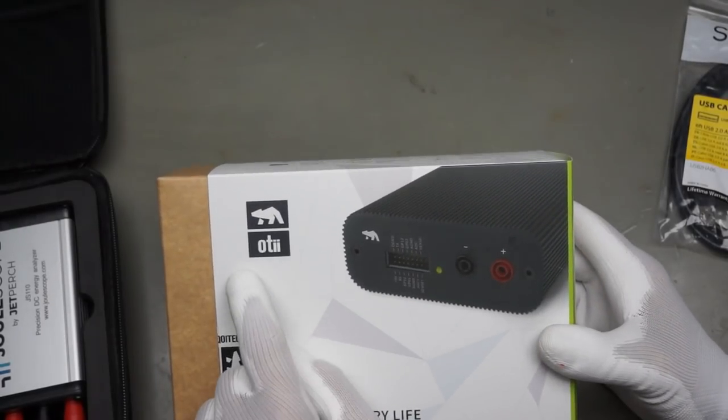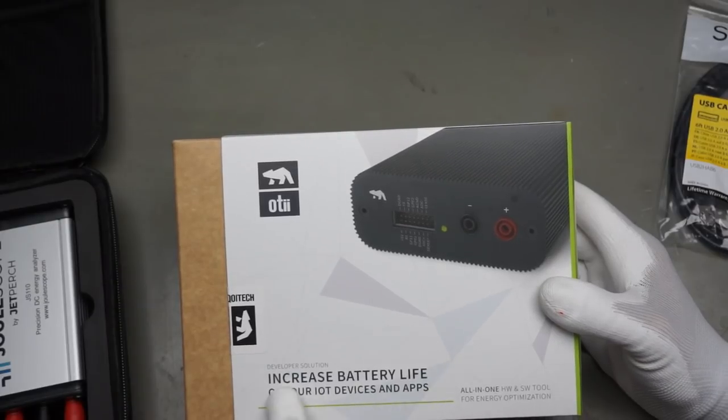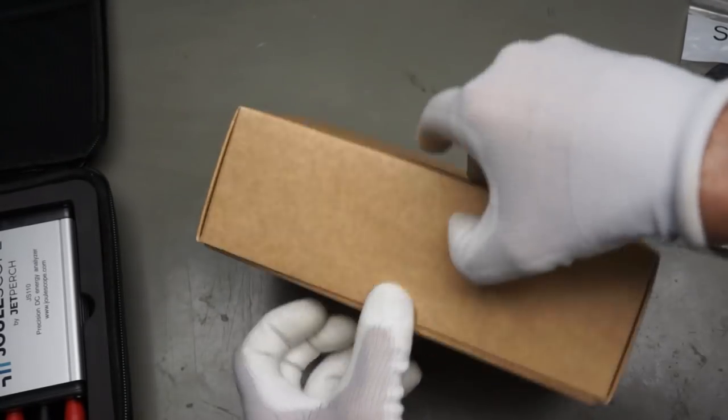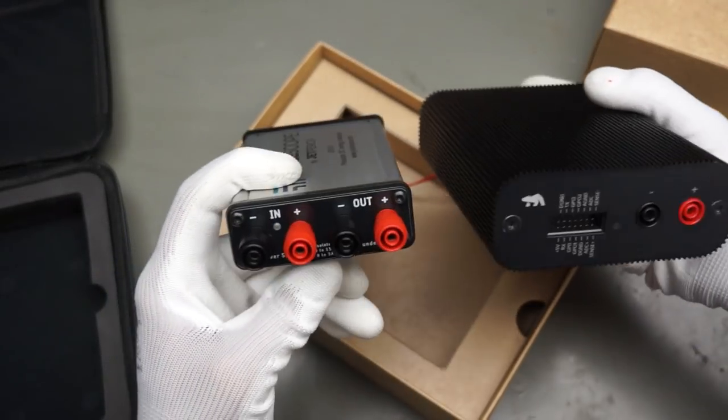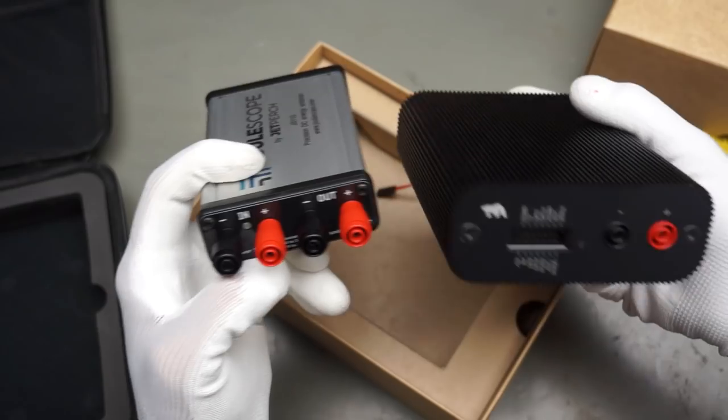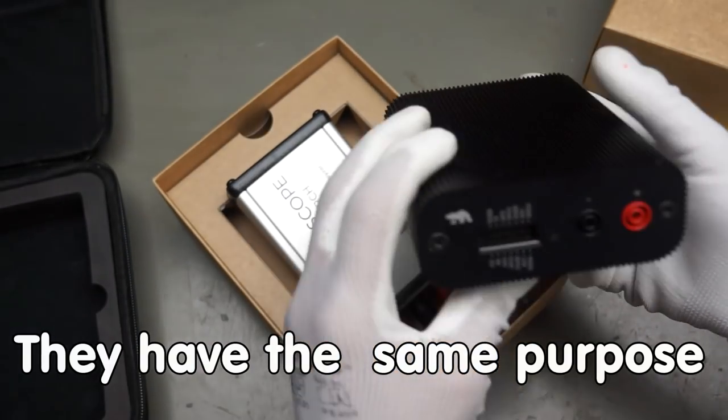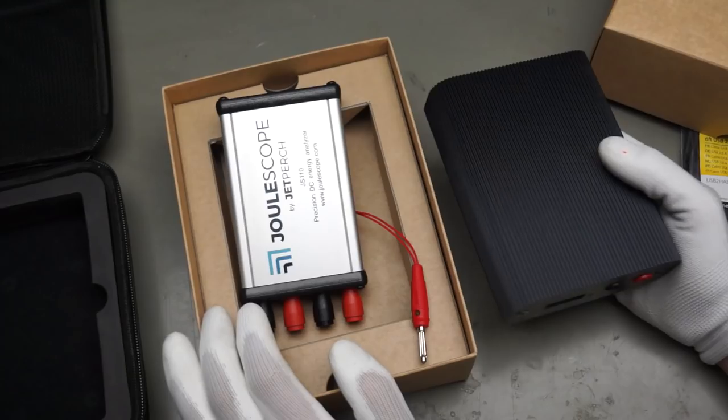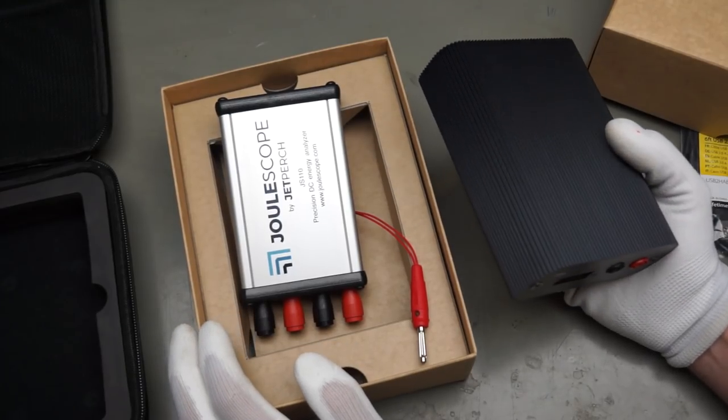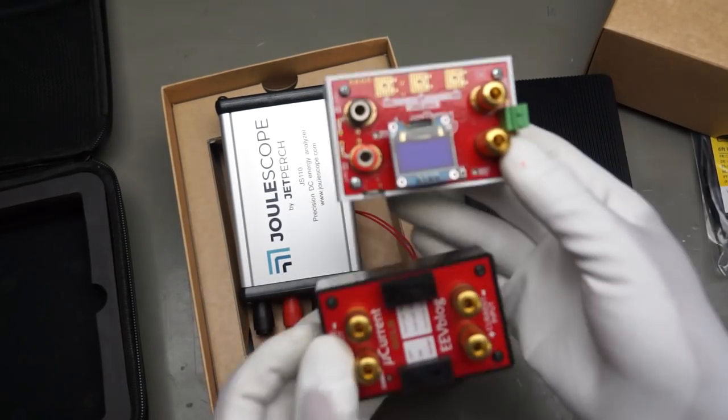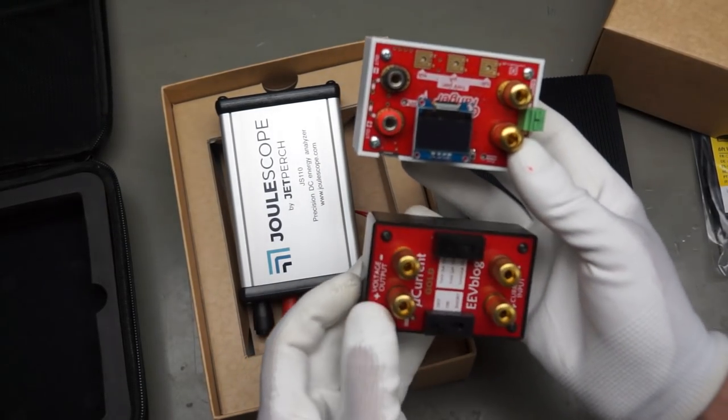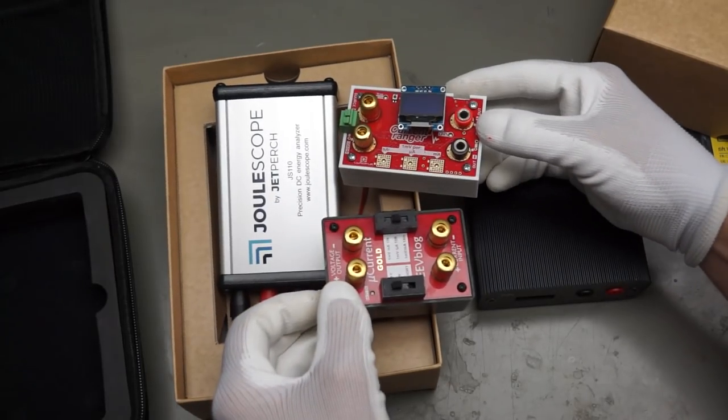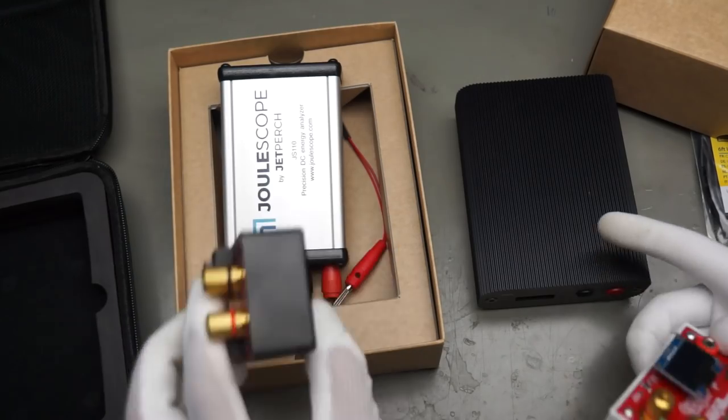Regular viewers might remember this Otii. Increase battery life of your IoT devices and apps. And this is basically the same thing. It is a little bit bigger than the Joulescope. But they are both the same. They have input and output power. And we can measure very low currents with these kind of devices. I made already a video about measuring small currents. Not with these two. But with those two devices.